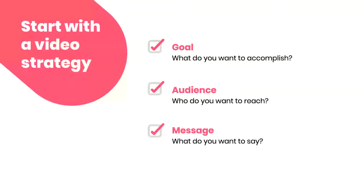The first item on the checklist is the goal — what do you want to accomplish? The more specific you can be, the better. It's easy enough to say 'I want to sell stuff,' but instead say something like 'drive traffic to a checkout page and achieve a 10% conversion rate.' That's a much better goal. Next, we've got the audience — who do you want to reach? Understanding your audience is key to crafting messaging that resonates. Start with demographics, but also think about the interests and behaviors of your audience.